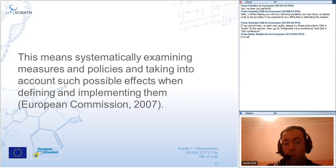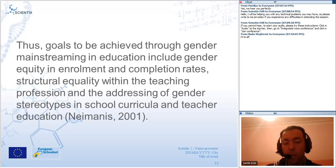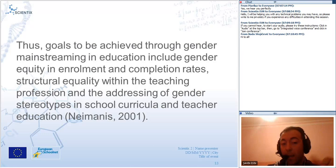Gender mainstreaming includes mobilizing all general policies and measures specifically for the purpose of achieving equity by actively and openly taking into account at the planning stage the possible effects on men and women — this is called a gender perspective. This means systematically examining measures and policies and taking into account such possible effects when defining and implementing them. Goals include gender equity in enrollment and completion rates, structural equity within the teaching profession, and addressing gender stereotypes in school curricula and teacher education.